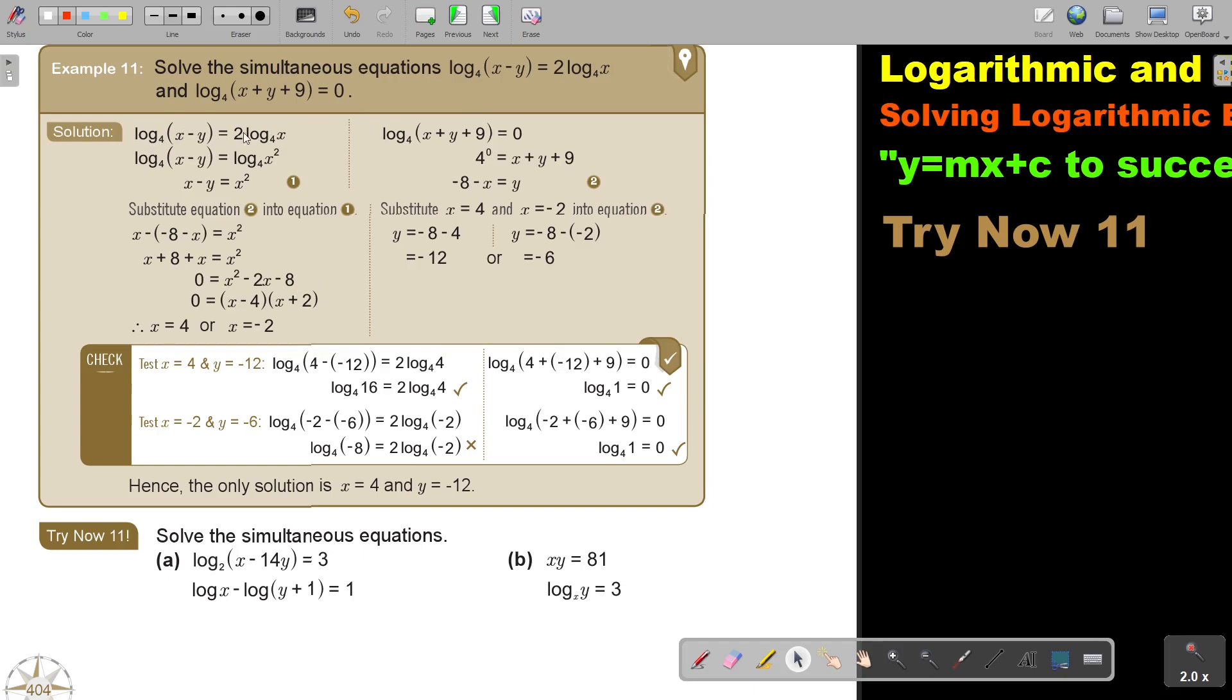So this is one term, one term. If I use that power law, it's jumping up. Then I can put this equal to this. So there's my first equation. In this one, I go from logarithmic form to exponential form. So I keep the 4 and I swap this. And then this is becoming 1.